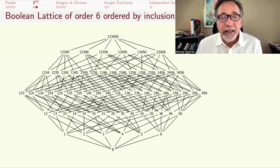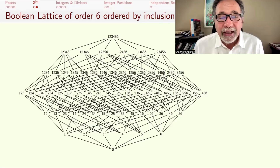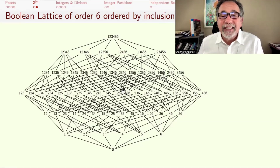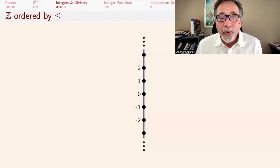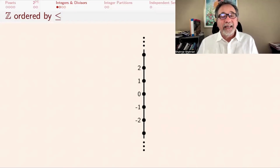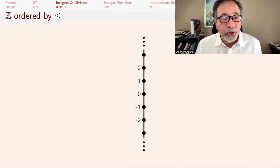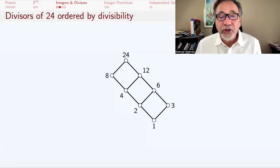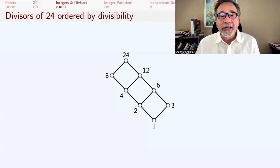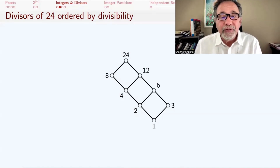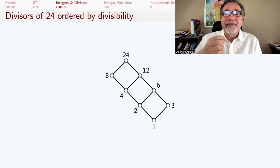This is the Hasse diagram of the Boolean lattice of order 6 — subsets of {1,...,6} ordered by inclusion. I've omitted the curly brackets and commas when writing sets. This is the Hasse diagram of the integers ordered by the usual ≤, and here is the Hasse diagram for divisors of 24 ordered by divisibility. The elements are 1, 2, 3, 4, 6, 8, 12, 24, and something is less than or equal to something else if it divides it.